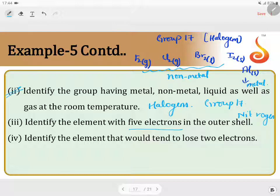Identify the element that would tend to lose 2 electrons. Alkali metals. Any alkali metal, it's Mg. I'll take it. Because it tend to lose 2 electrons to become Mg2+.